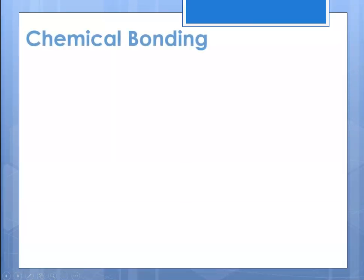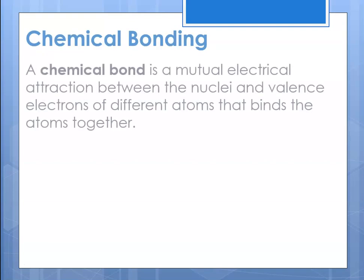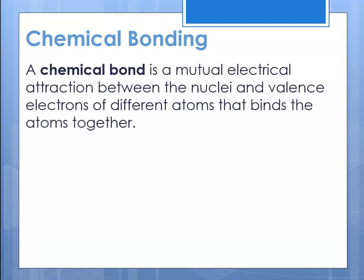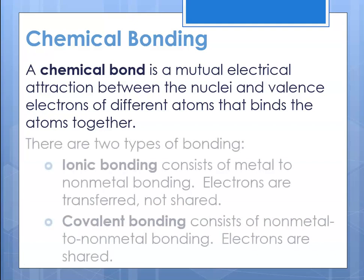For starters, let's remind ourselves what chemical bonding is. Chemical bonding is that mutual electrical attraction that occurs between the nuclei and valence electrons of different atoms, and it's what binds them together. The valence electrons are the outermost electrons, so we're talking about electrons in the S and P sublevels.